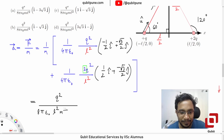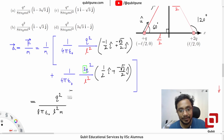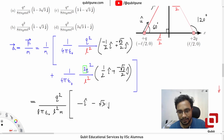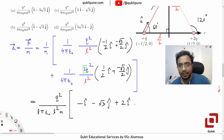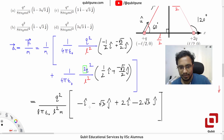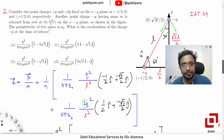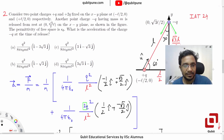Dividing by m for the acceleration, what remains inside is: combining the contributions, the î terms give (2 − 1) → but consolidating both force contributions yields î component as +2 and −ĵ component as −2√3. Simplifying, the net vector direction is î − 3√3 ĵ. So the option containing this vector should be chosen.